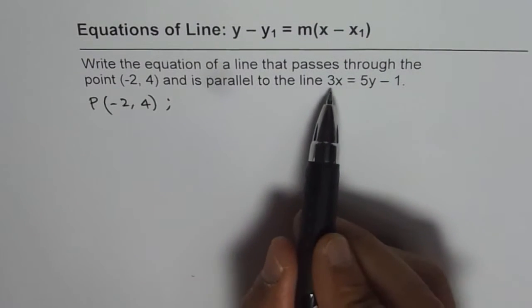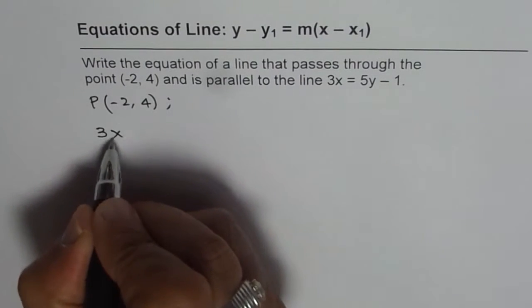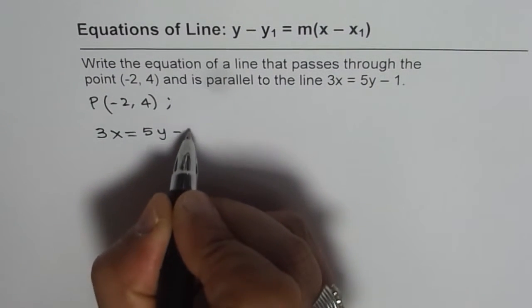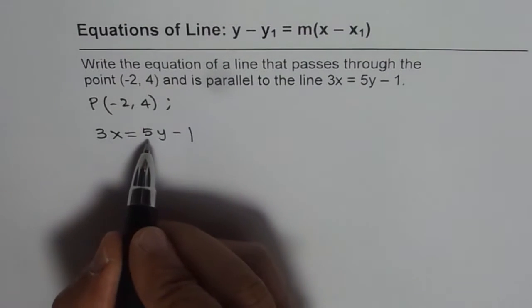To find slope we will rearrange the given line. The given line is 3x equals to 5y minus 1, let's rearrange and find slope of this line.